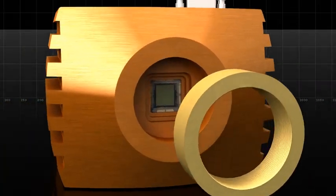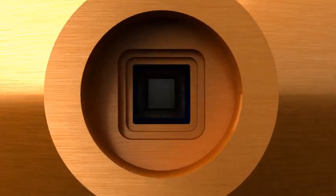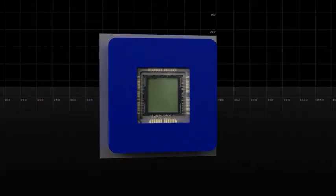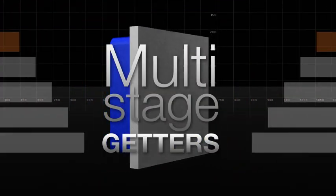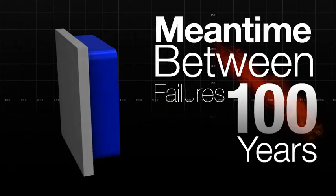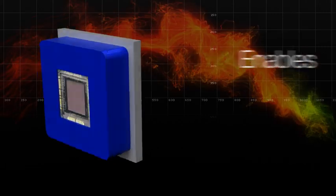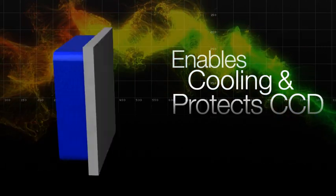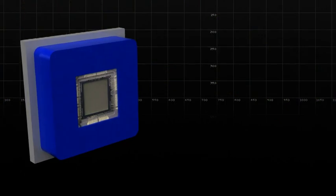Pentavac is a small, lightweight chamber in a self-contained package holding the CCD. Advanced multi-stage getters ensure a lifetime vacuum guarantee with a mean time between failures of 100 years. The vacuum not only enables cooling, it also protects the quality and integrity of the CCD.